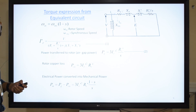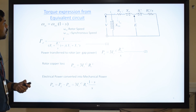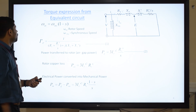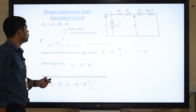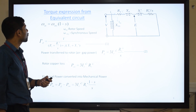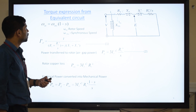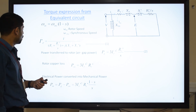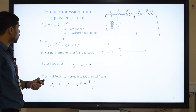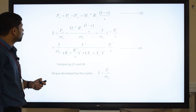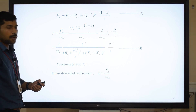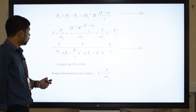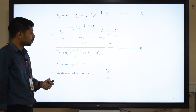Let us start with the torque equation of the induction motor using the equivalent circuit, which we have seen last semester. The basic equation is: rotor speed omega_m equals omega_ms into (1 minus s), where omega_m is the motor speed and omega_ms is the synchronous speed. Equation 1 gives rotor current; equation 2 gives air gap power; then we have rotor copper loss; equation 3 gives electric power converted to mechanical power. From these, torque equals power divided by speed. Substituting values, the torque equation is: air gap power P_g divided by synchronous speed.